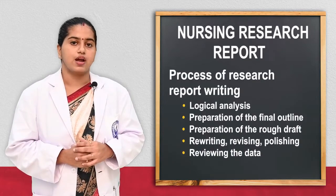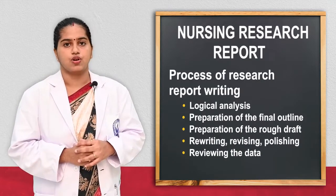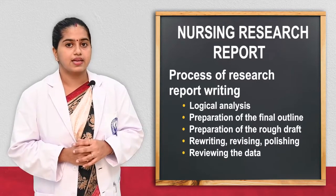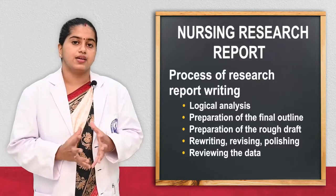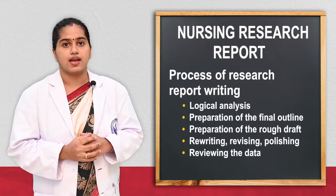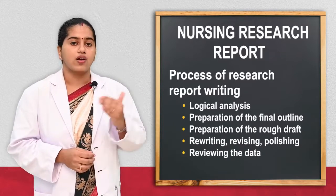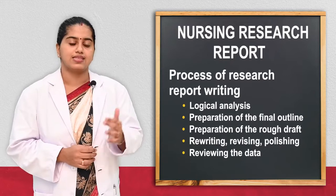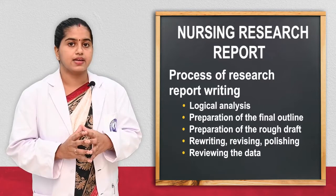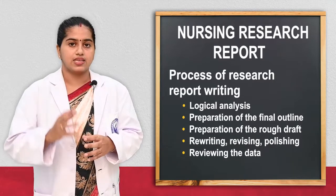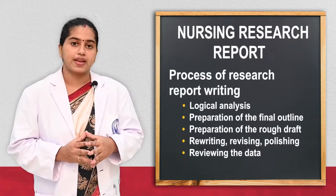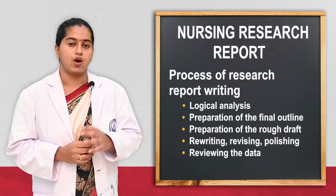Next we will see what is the process of the nursing research report. The first step is gathering the baseline data — whatever data there is in the research, it has to be collected and arranged in a logical and sequential manner. Logically, they have to mentally think how to organize the data, then sequentially arrange it. The second step is preparation of the outline, the final outline — whatever research the researcher has done, the content has to be written out and a draft outline has to be prepared.